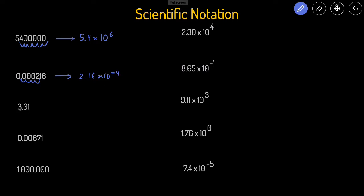This one is 3.01 — in this case the decimal point is already between the first two numbers, so this would just stay as 3.01 times 10 to the zero, because we don't have to move any decimal points. Ten to the zero is essentially just one, so this is the same as 3.01 times one.